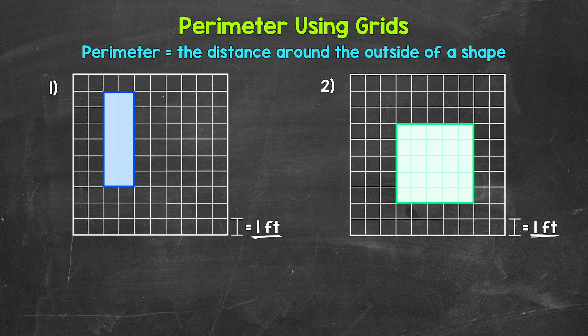Well, we find perimeter by adding all of the side lengths. That will give us the distance around the shape — the perimeter. Let's start by figuring out the side lengths, and we will start up top. We have one foot here and one foot here, which means that side length is two feet.